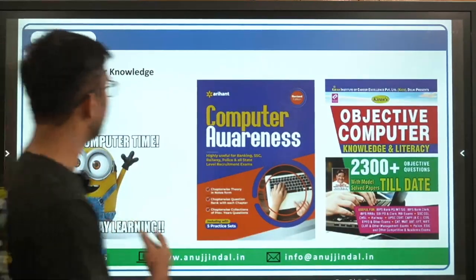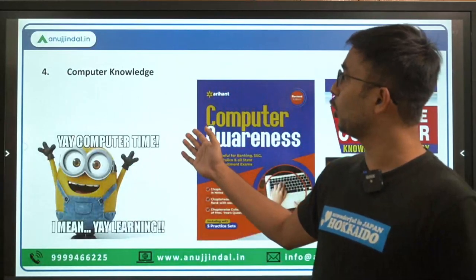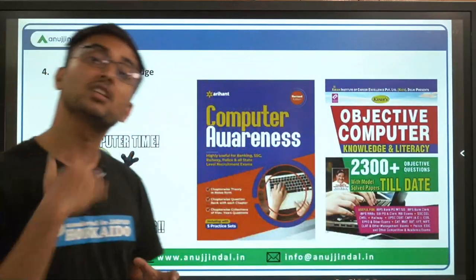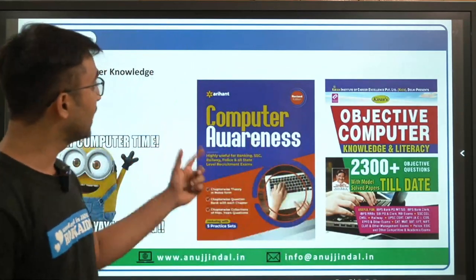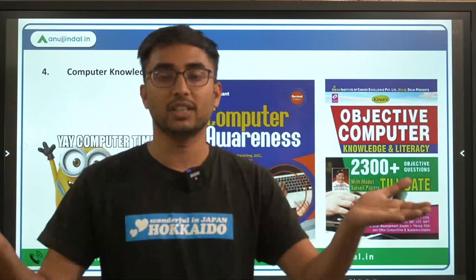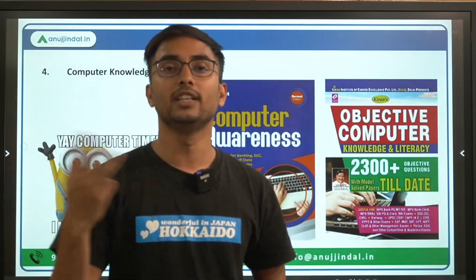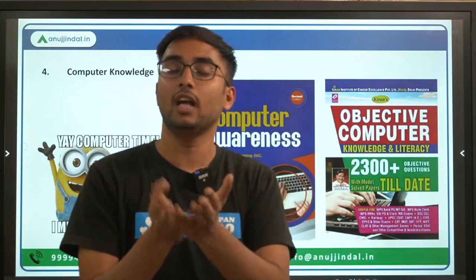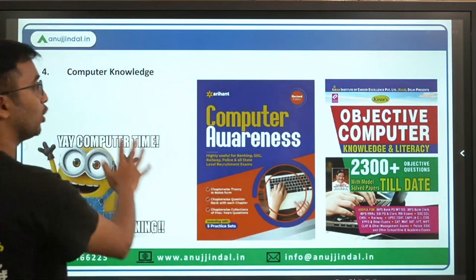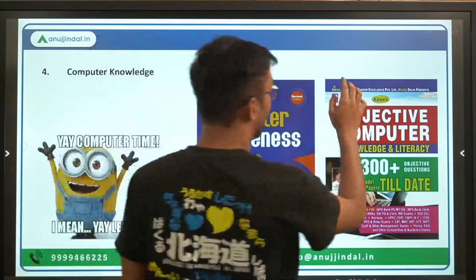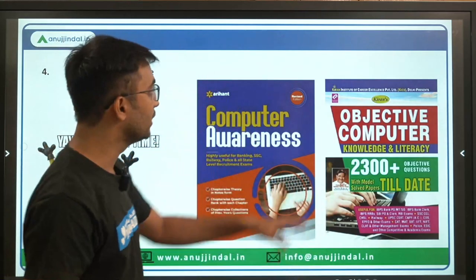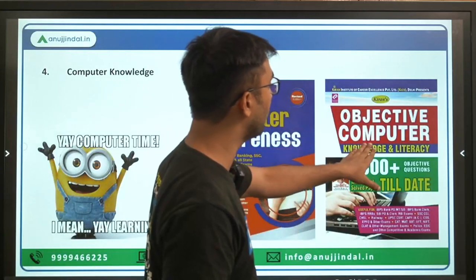For computer knowledge, many candidates ignore this subject, but since all six subjects have sectional cutoffs, do not neglect any subject. The key to clearing NABARD is getting balanced marks across all eight subjects and excelling in two to three. For computer knowledge specifically, rely on Computer Awareness by Ariyant Organization for static information, and for objective questions rely on Kiran Publications' Objective Computer Knowledge and Literacy.